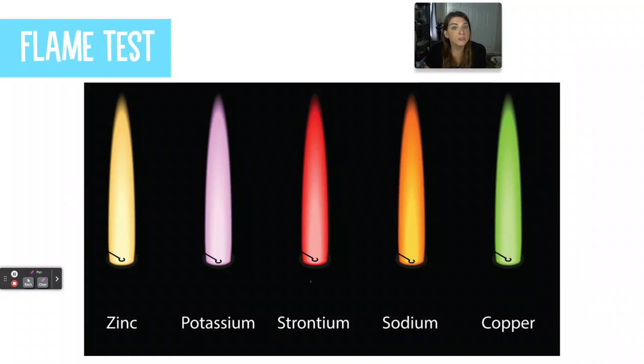Here are some examples of flame tests. If you take zinc and you excite it, it will feed back yellow light. Potassium has this beautiful pale purple. Strontium is a very rich firetruck red. Sodium is kind of boring. It's a typical orange color. And copper is one of my favorites. Although that copper, in my experience is a little bit more blue than that. It's like awesome blue green color.